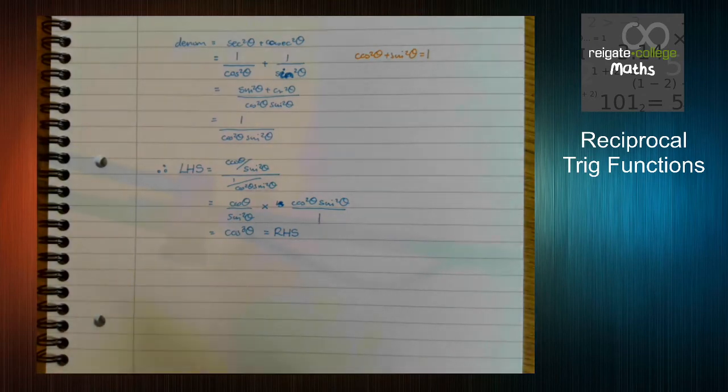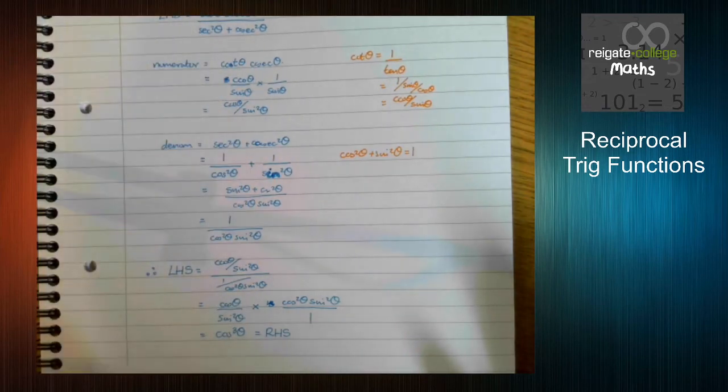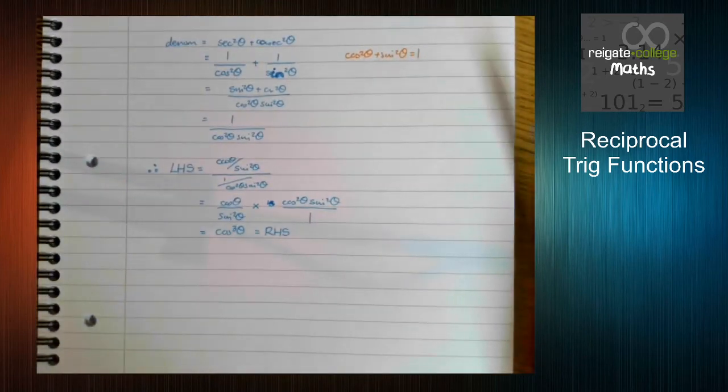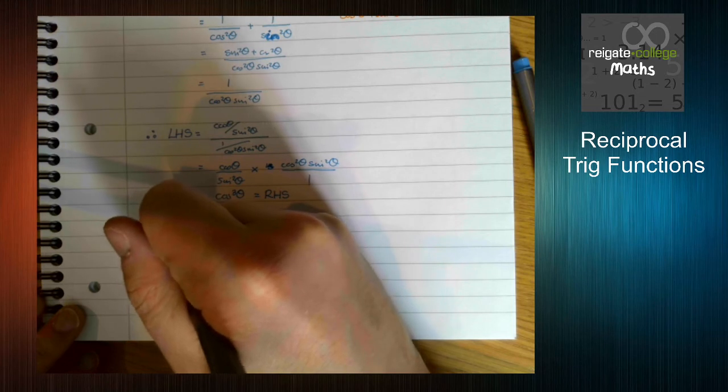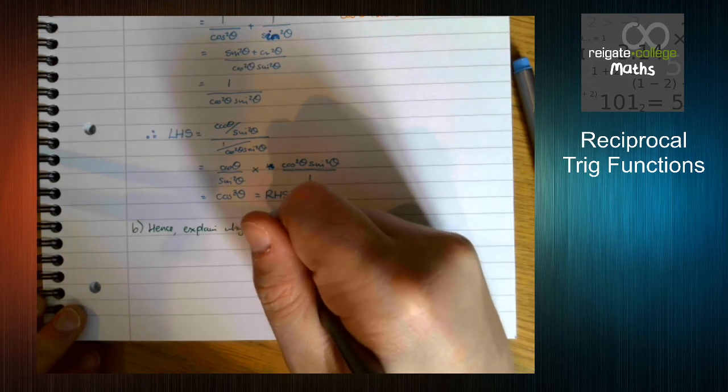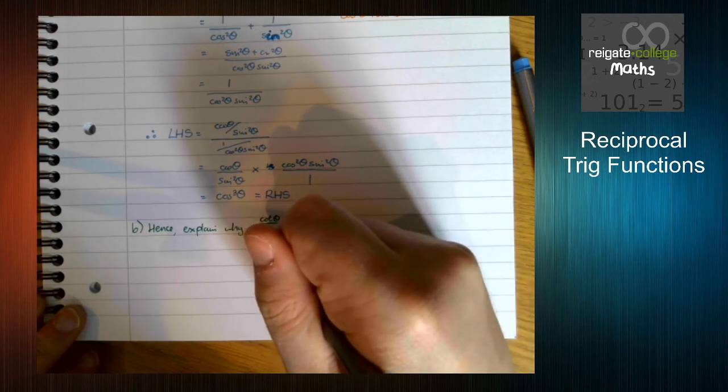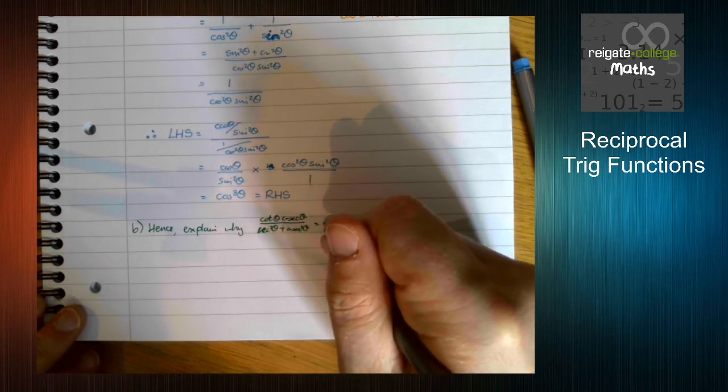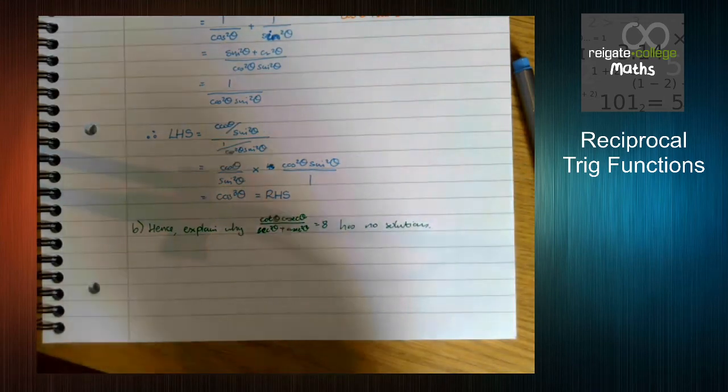This is a very long-winded way of doing this question. You could probably get away with doing each of these bits in their respective fraction, but then it gets a little messy. Very quick part B with this. Hence explain why the expression that we've been playing around with cannot equal 8.